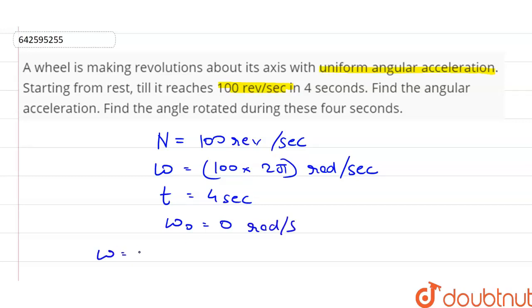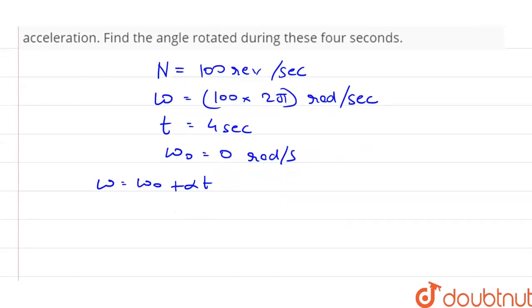Using the formula ω equal to ω₀ plus αt and putting the values ω₀ is 0 and ω is 100 into 2π equal to α into 4 seconds. So α becomes equal to 0.5 into 100π equal to 50π radian per second square.